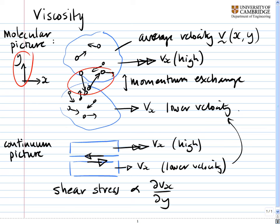And the coefficient of proportionality here is the viscosity. The shear stress is equal to the viscosity times the velocity gradient.